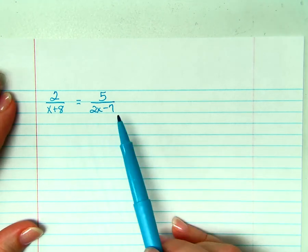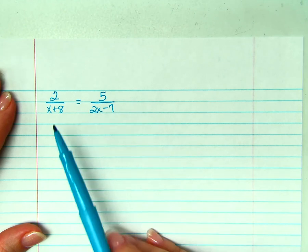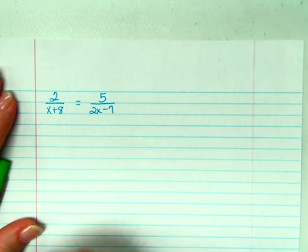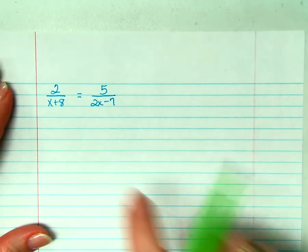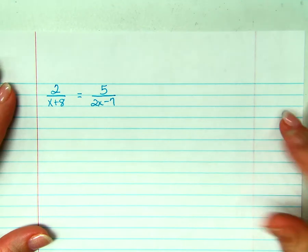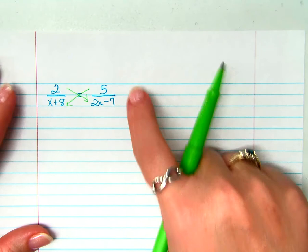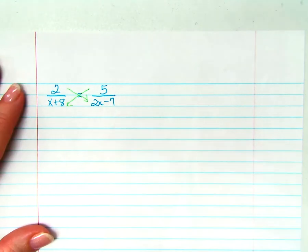So what we have here is two fractions set equal to each other. When you have two fractions set equal to each other, we can solve this by cross-multiplying. In fact, this is the only time we can use cross multiplication. It's kind of like a proportion. Only when it's a fraction and a fraction, not when it's anything else. There can't be anything else added or subtracted on either side, just one fraction and one fraction.